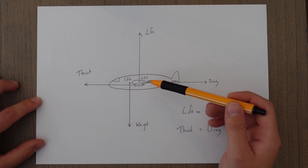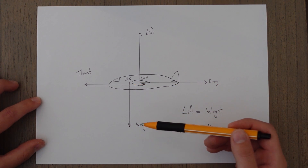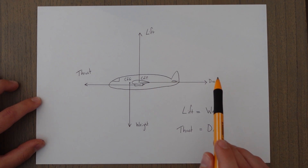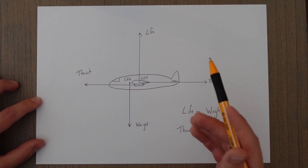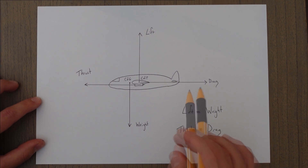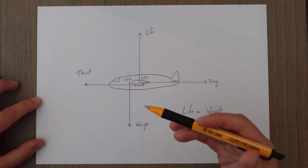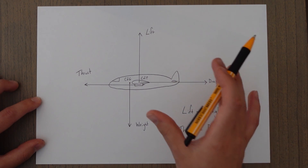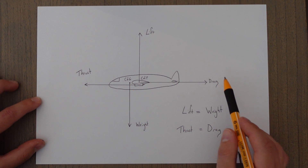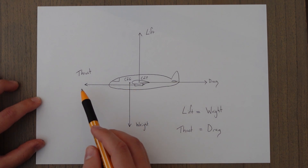Lift acts through the center of pressure, as we know, and the weight acts through the center of gravity. Drag acts partly through the center of pressure — that's the induced drag portion — and the parasite drag acts over the whole aircraft. If we take the average position, it may be above or below the center of pressure, but for simplicity we just assume that drag acts through the center of pressure. Thrust acts through the center of the engine.